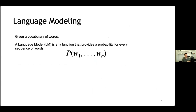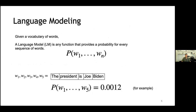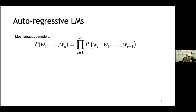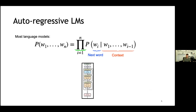Just to verify we're on the same page: language modeling — given a vocabulary of words, a language model or LM is any function that provides a probability for every sequence of words. For example, for the sentence 'the president is Joe Biden,' a language model may output a probability of 0.0012. Most language models today are autoregressive, which means we decompose the joint probability of words W1 to WN into the product of the probability of every next word given the context — all previous words from 1 to i minus 1. We train the language model to predict the next word.